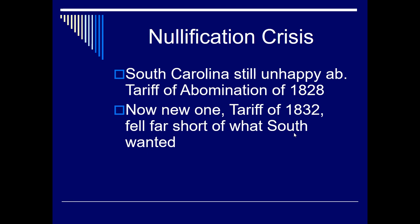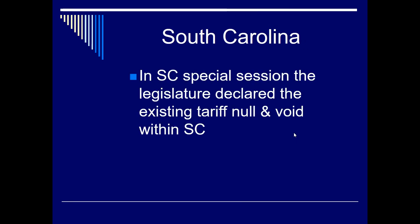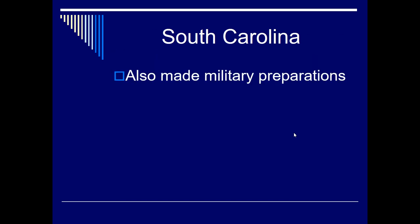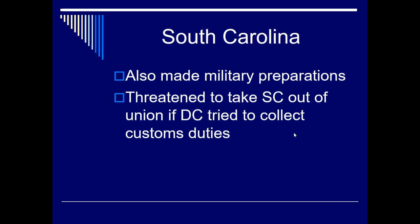States are not only protesting but violently protesting — threatening secession. Andrew Jackson has to take a stand and declare that the union is first and foremost; the union cannot be divided. South Carolina holds a special session that declares the existing tariff null and void within South Carolina, starts making military preparations, and threatens to leave the union if Washington tried to collect any customs duties from this tariff.